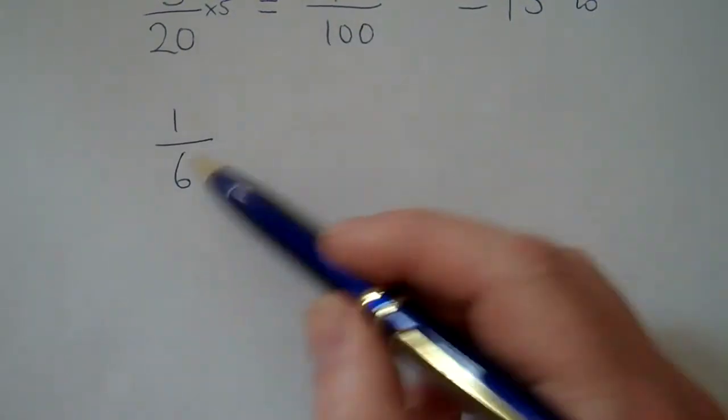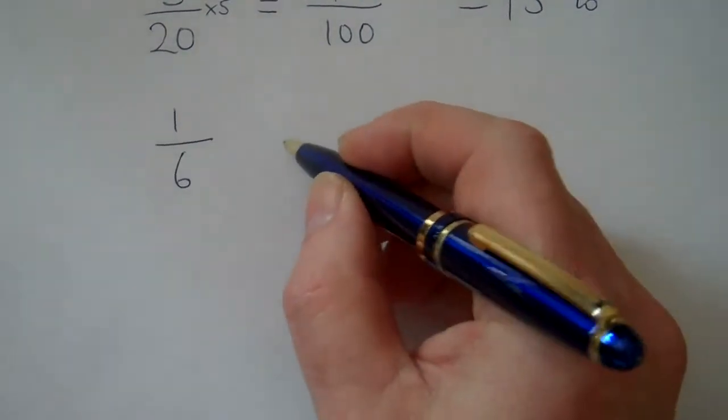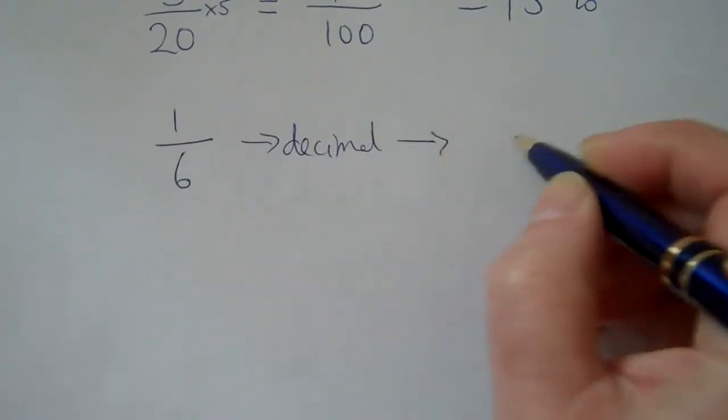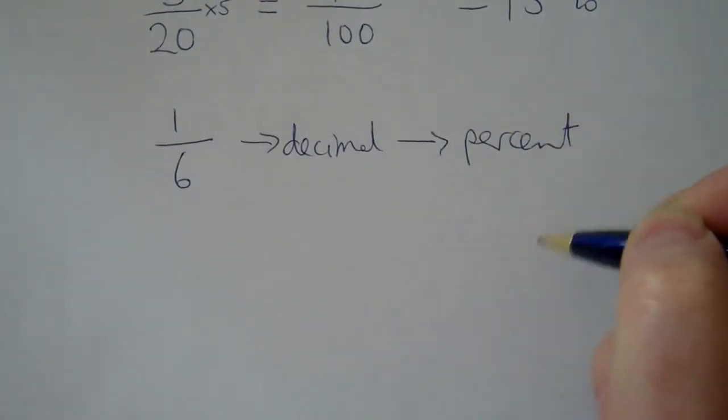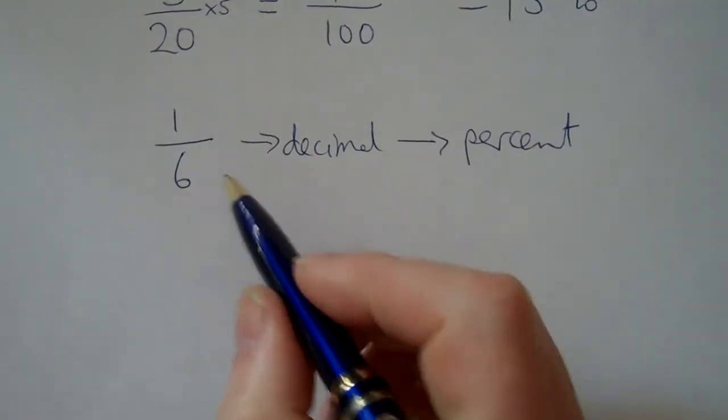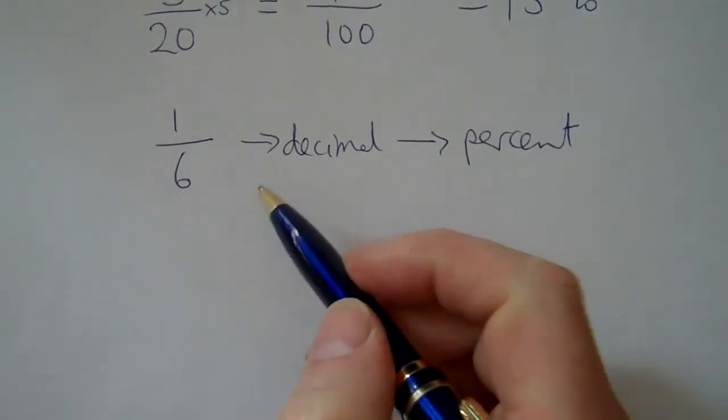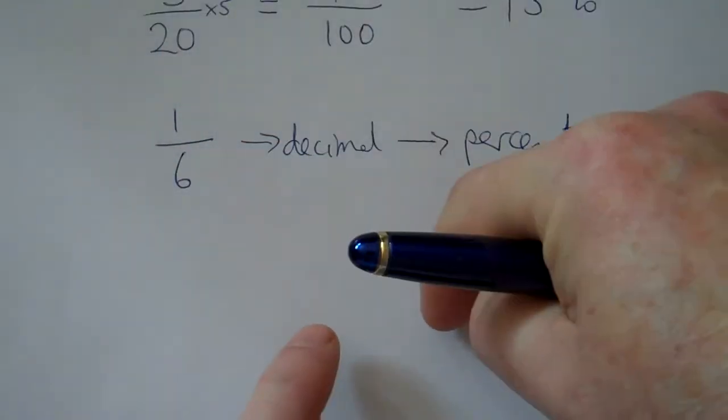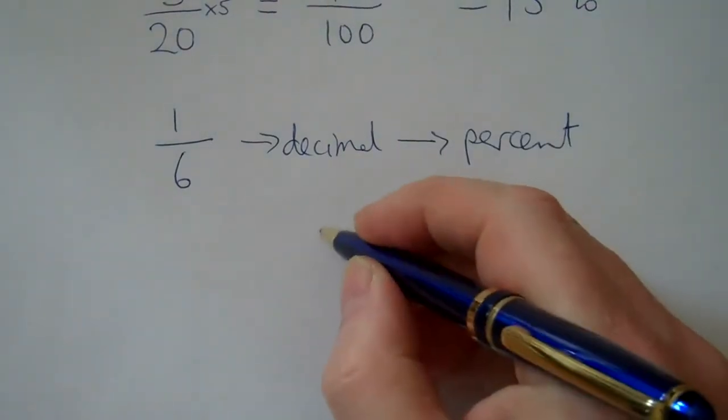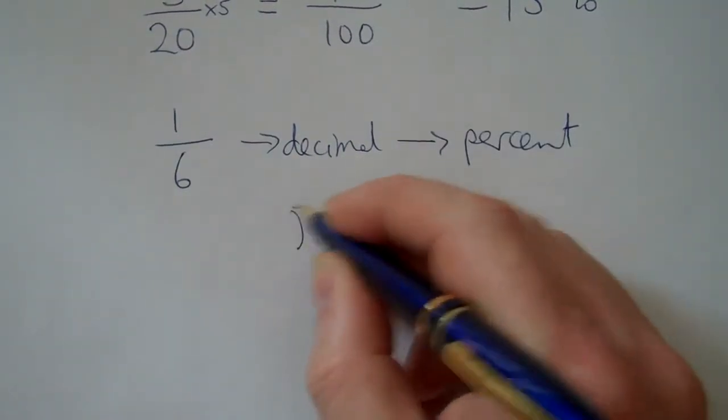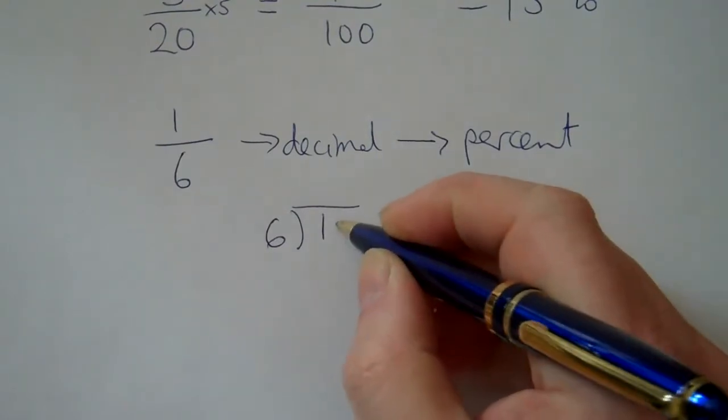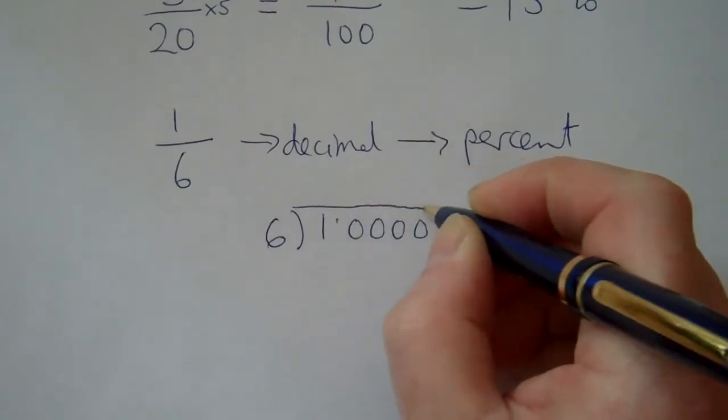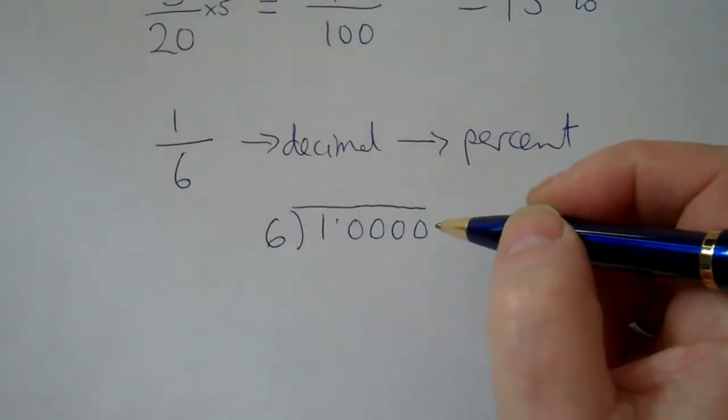We can't multiply up directly. The tactic is to first turn into a decimal and then go from the decimal to the percentage. So how do we convert one sixth into a decimal? Well, we can say it's the same as one divided by six. So we topple the fraction over. Remember to get it the right way round. We can say one divided by six. And again, we're probably going to add a few decimal points here because it's less than one. So we're going to need those points.